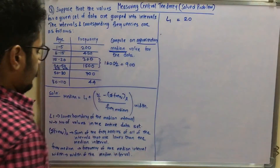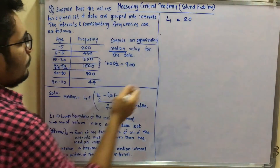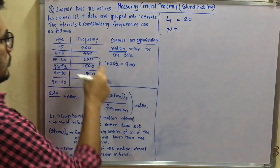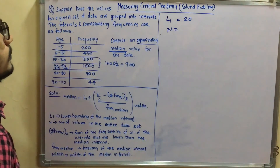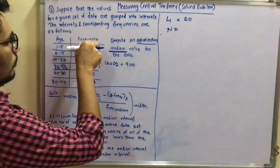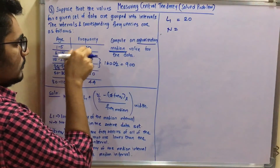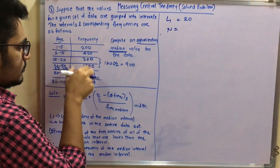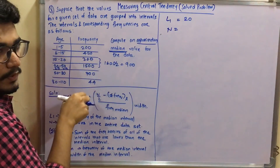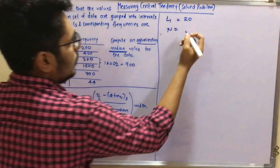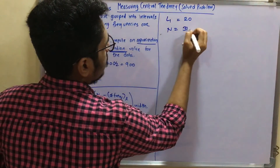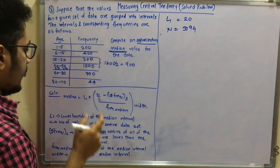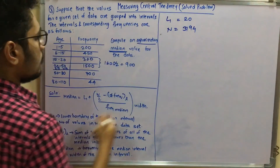Next we calculate n, the summation of all frequencies: 200 plus 450 plus 300 plus 1500 plus 700 plus 44, which comes out to be 3194.